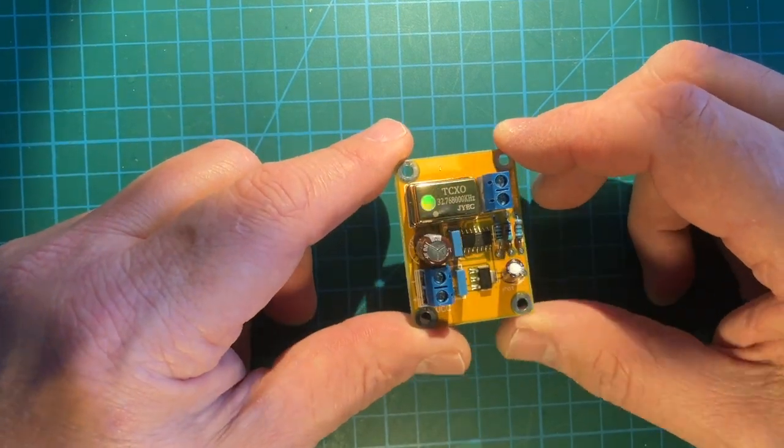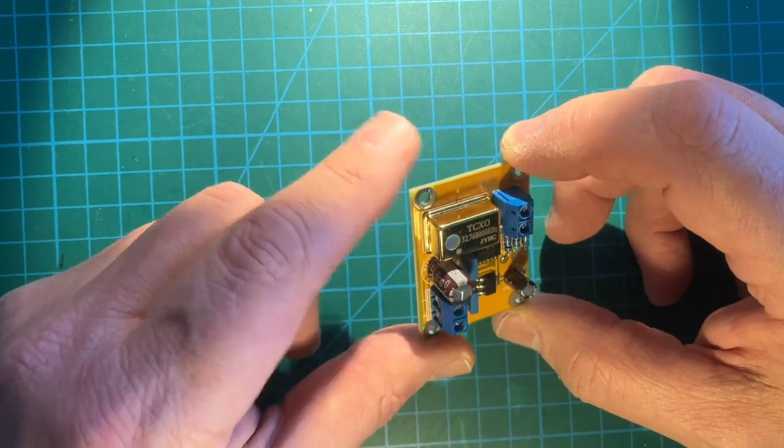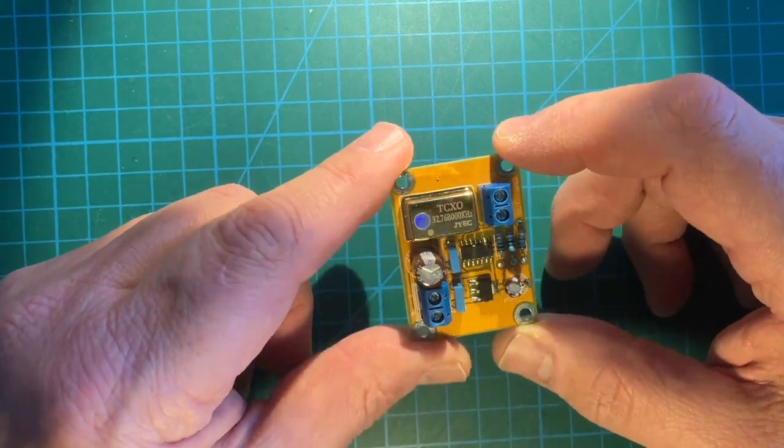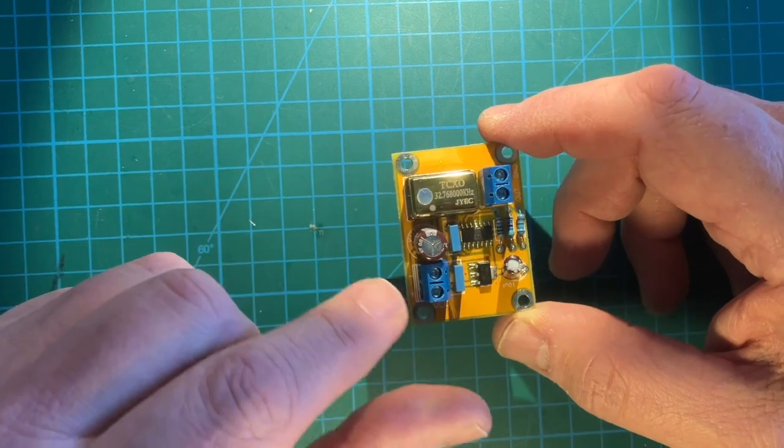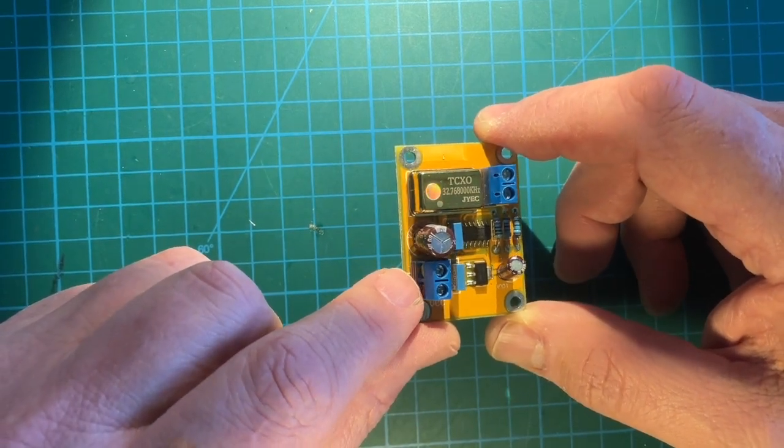But what it is, is a temperature compensated crystal oscillator, which is basically this little metal can here. And it's a pretty straightforward circuit. It runs the specs, and I've tested it and I'll show you what the output looks like.